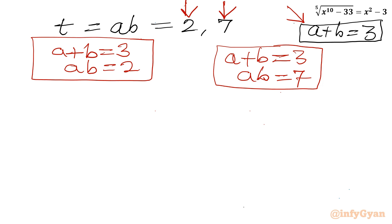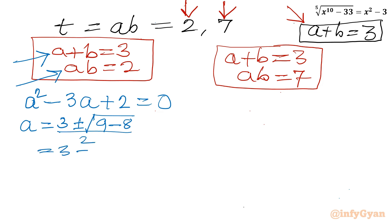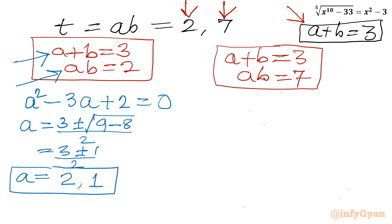For each system, a and b are roots of a quadratic. First system: a squared minus 3a plus 2 equals 0. Applying the quadratic formula, a equals (3 ± √(9−8))/2 = (3 ± 1)/2, giving a equals 2 or a equals 1. Second system: a squared minus 3a plus 7 equals 0. Checking discriminant: 9 minus 28 equals minus 19, which is negative.